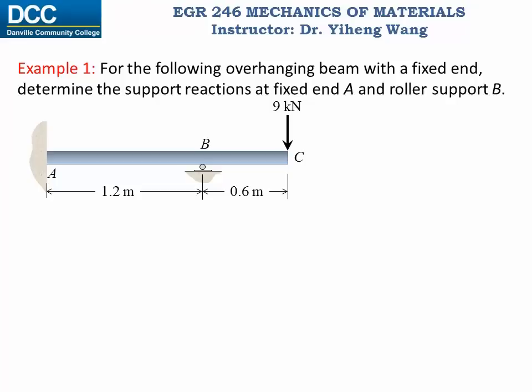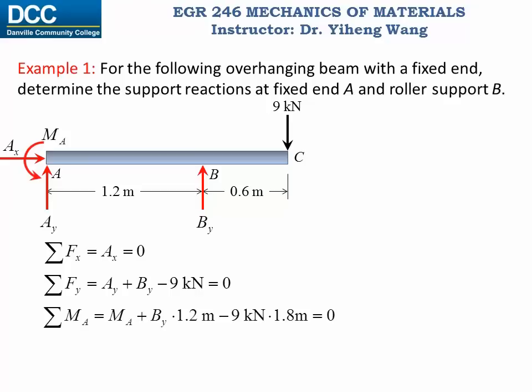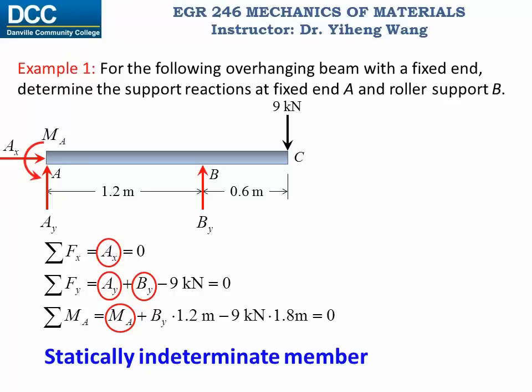For this overhanging beam it has one fixed end at point A, and it is also supported by a roller support at point B, and it is subjected to a 9 kN external force at point C. We need to determine all the support reactions at the fixed support A as well as the roller support B. We proceed by drawing the free body diagram, marking all the unknown support reactions, and writing our three equilibrium equations for a 2D static problem. We will realize that we have overall four unknowns but only three equations. Therefore this is a statically indeterminate member, and we cannot solve for all the unknowns using equilibrium alone.